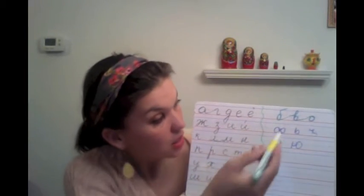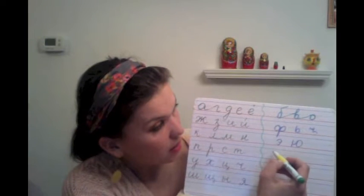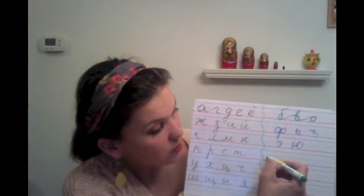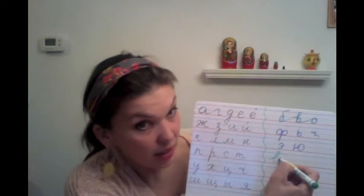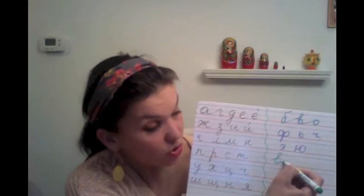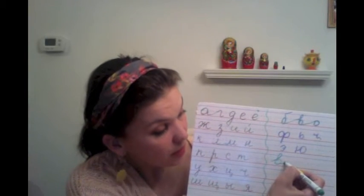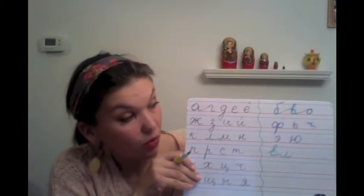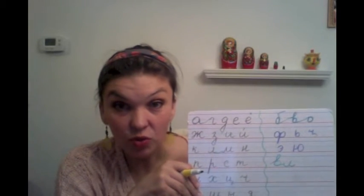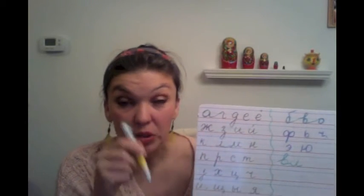So let's do V one more time. Here is my V — I go around the circle. Let's say I want to connect it to L: I go up and then I go down, because L starts a little bit off the bottom of the line. So here are the easy rules.